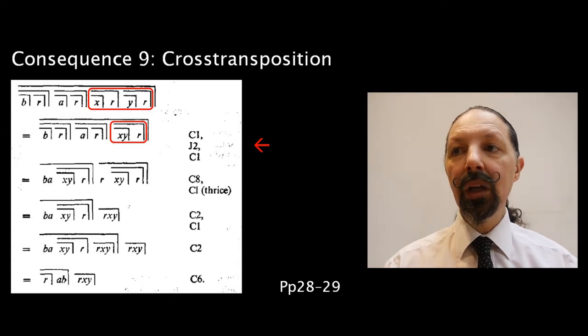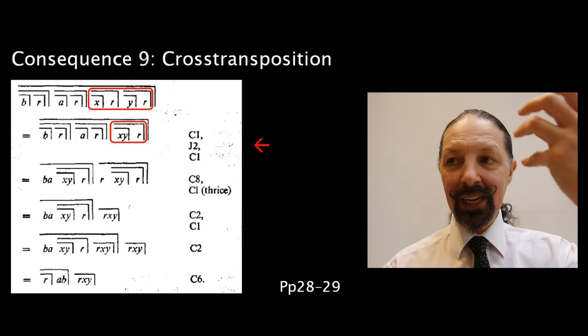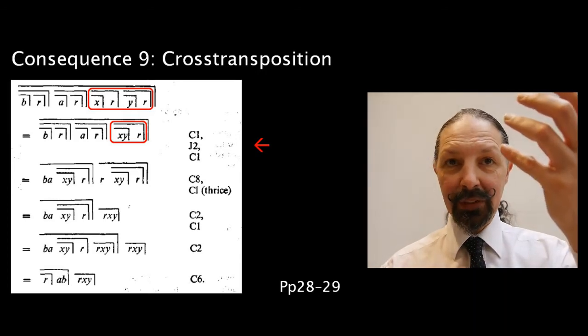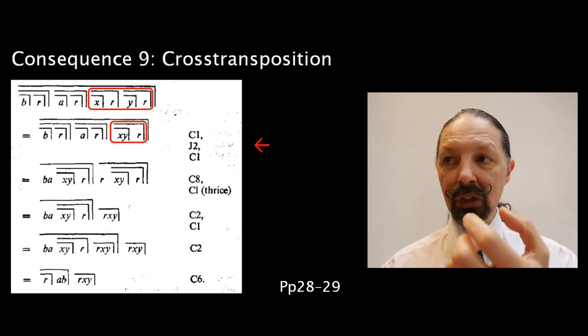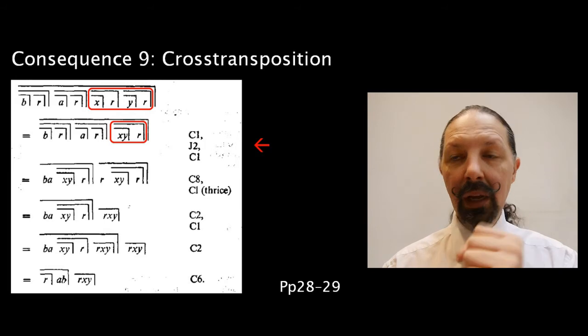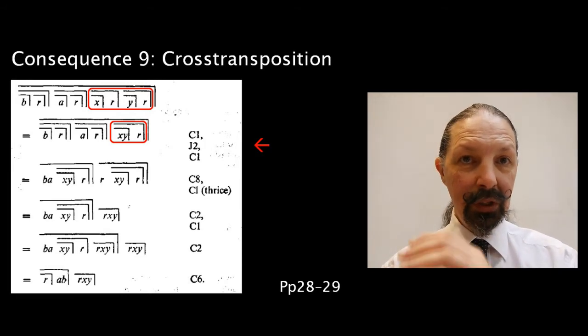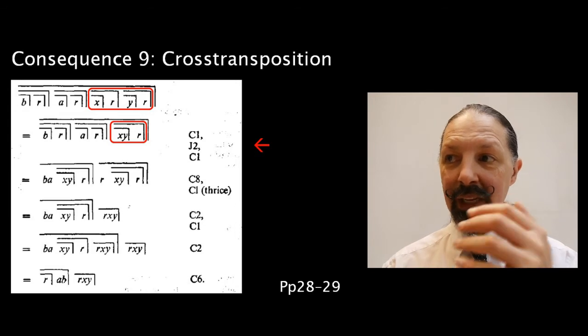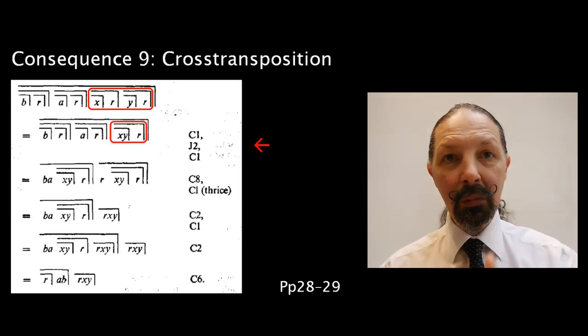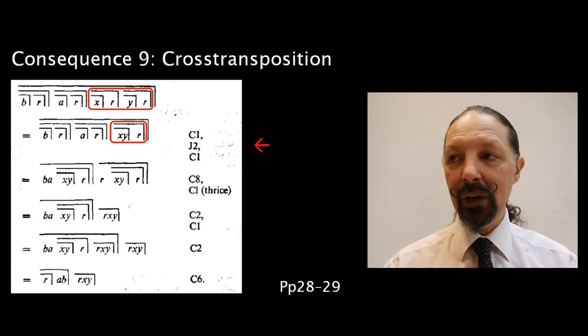Now you can see that the first part of the expression has been copied down, the second part of the expression has been copied down. But how does the next part of the expression get reduced to what we see here in the second line? There are three steps he's put into shorthand: C1, J2, C1. It's a sequence we're going to come across more and more frequently from now on. So let's see how it works.